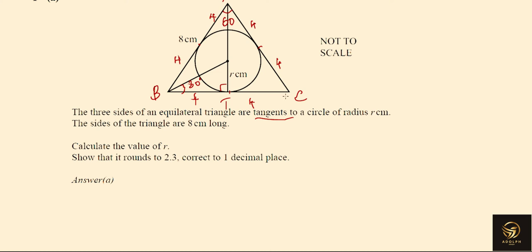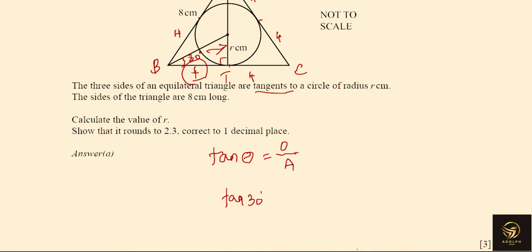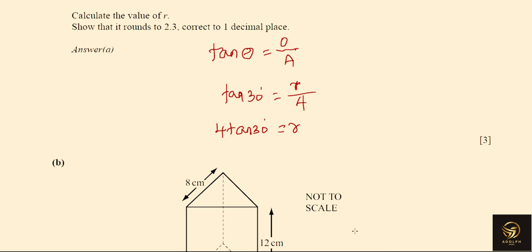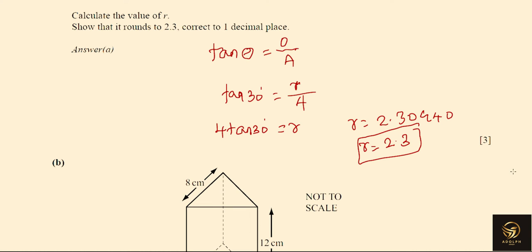The side length is 4 centimeters — r is the opposite side and 4 is the adjacent side. Using tan θ = opposite/adjacent: tan 30° = r/4, so r = 4 tan 30°. Putting this in the calculator gives r = 2.30940. Rounding to one decimal place gives 2.3. Remember: when asked to prove a rounded answer, always write the unrounded value first — that is mandatory.